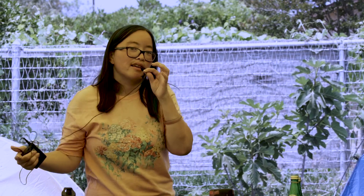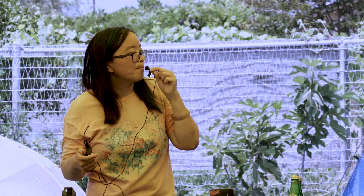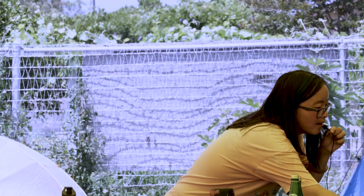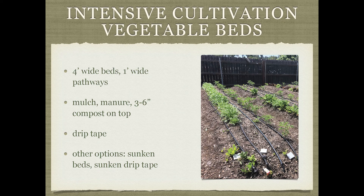I try to be less infrastructure-oriented, but some people are excited by packaged gardening ideas. Garden socks do require replacing the soil every couple of years, which can be tedious. The vegetable beds at Buena Vista are four feet wide with one-foot pathways, layered with mulch, manure, and compost on top, using drip tape. Some ideas for conserving water include digging the bed in as a sunken bed or digging a groove for the drip tape, though ultimately good soil quality is what really helps water infiltrate better.